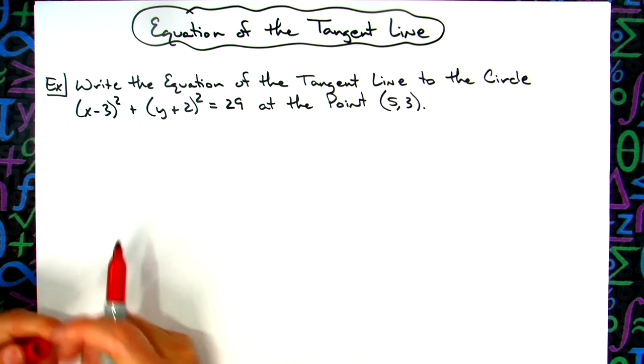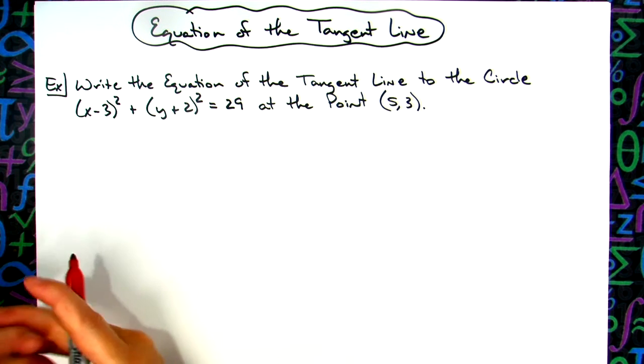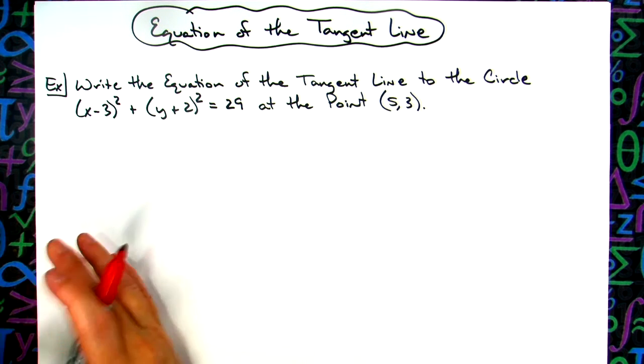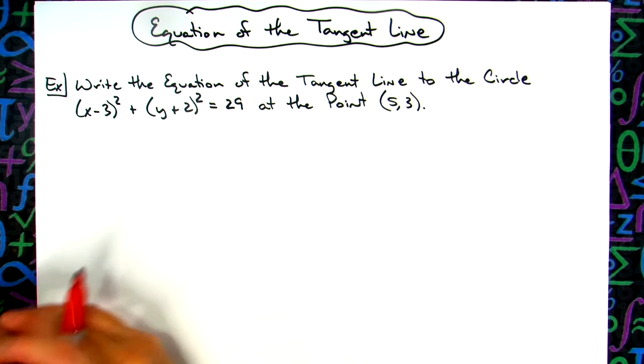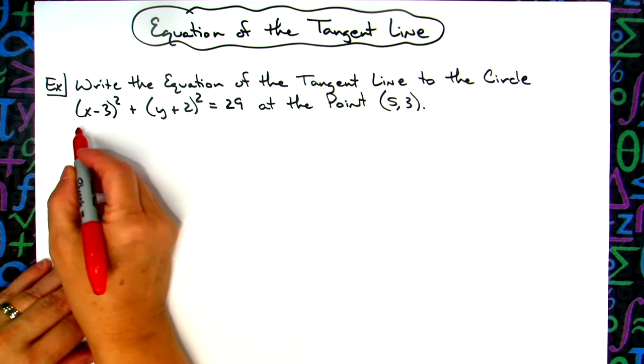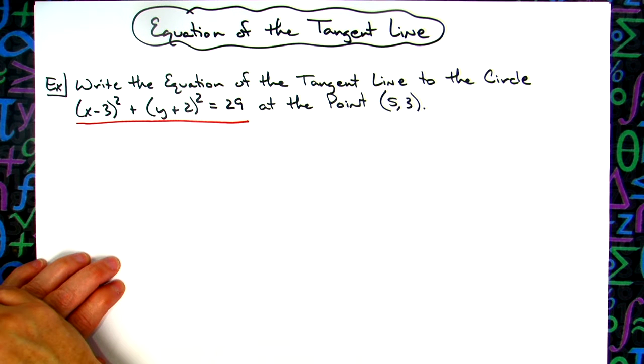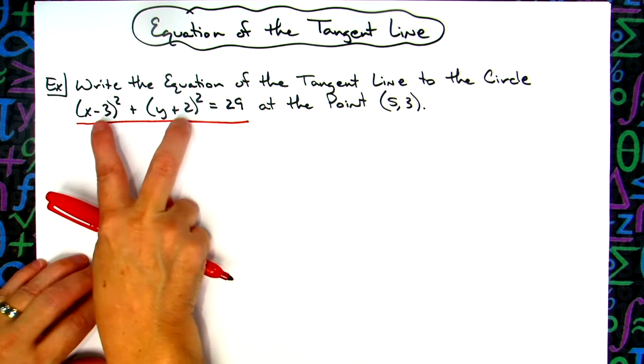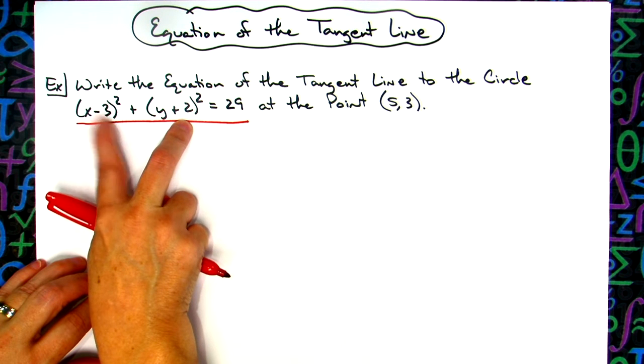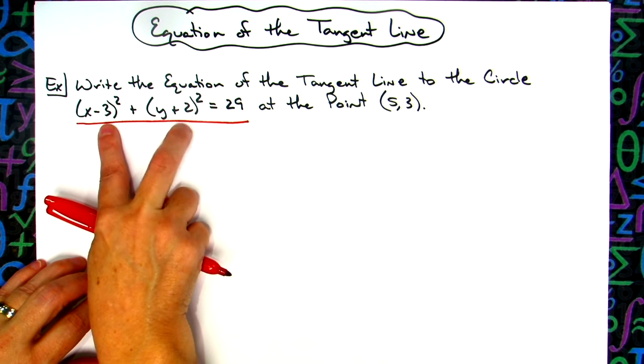So probably the approach I would take here is maybe do a little sketch just to see it visually before you attempt to work it out algebraically. If I take right here and look at this equation of the circle, then I should be able to real quickly find the center of the circle. The center is going to lie at three negative two.